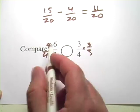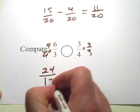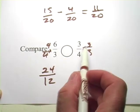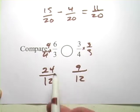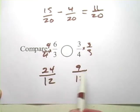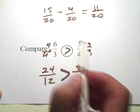When we do our multiplication, we get 4 times 6 is 24 over 4 times 3 is 12. And then over here, we get 3 times 3 is 9 over 4 times 3 is 12. And so the question is, 24, how does that relate to 9? Well, it's greater than 9, so 24 twelfths is greater than 9 twelfths. So we can put a greater than sign in here.